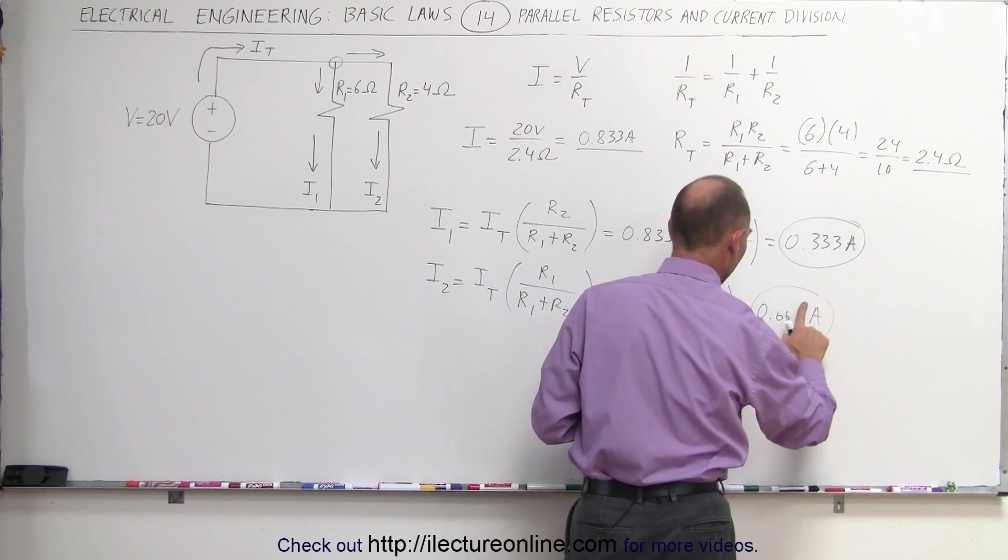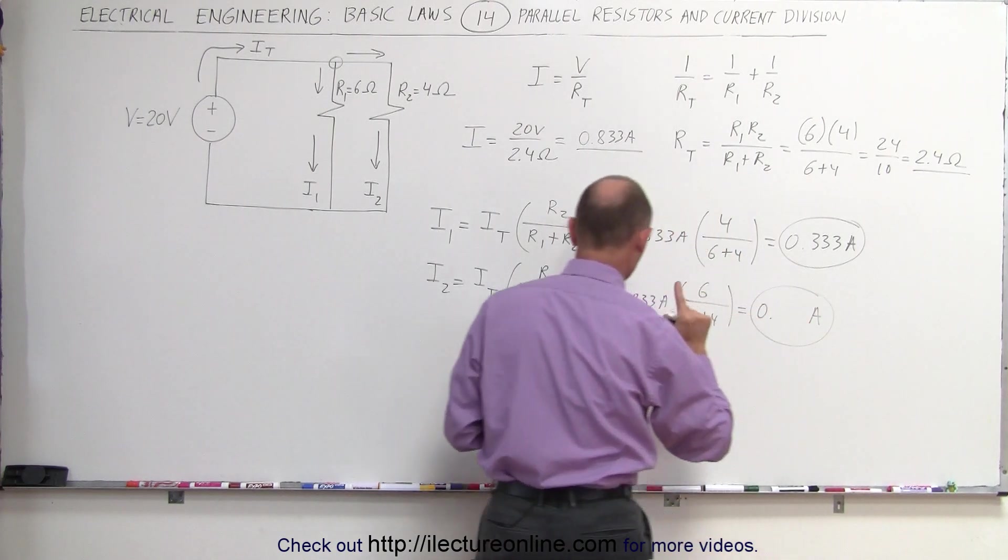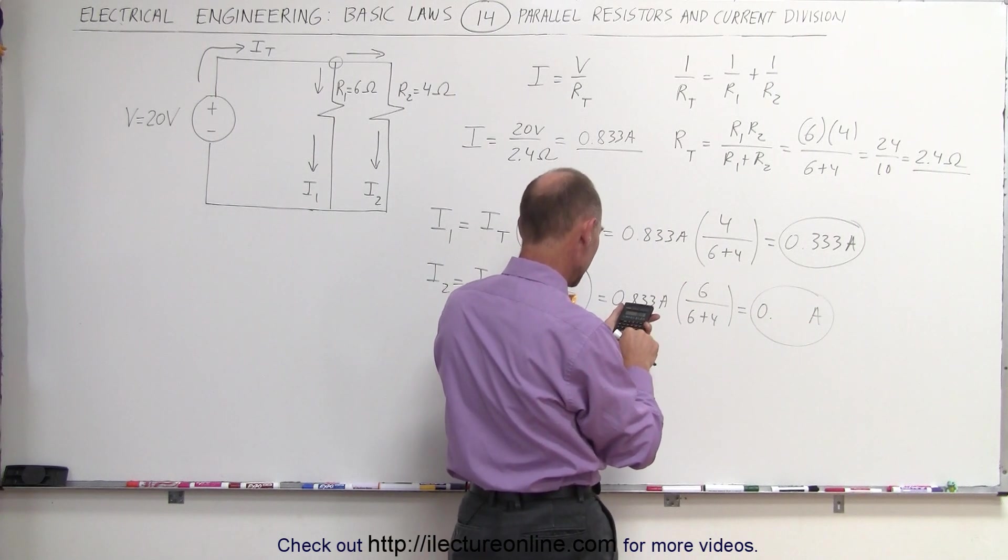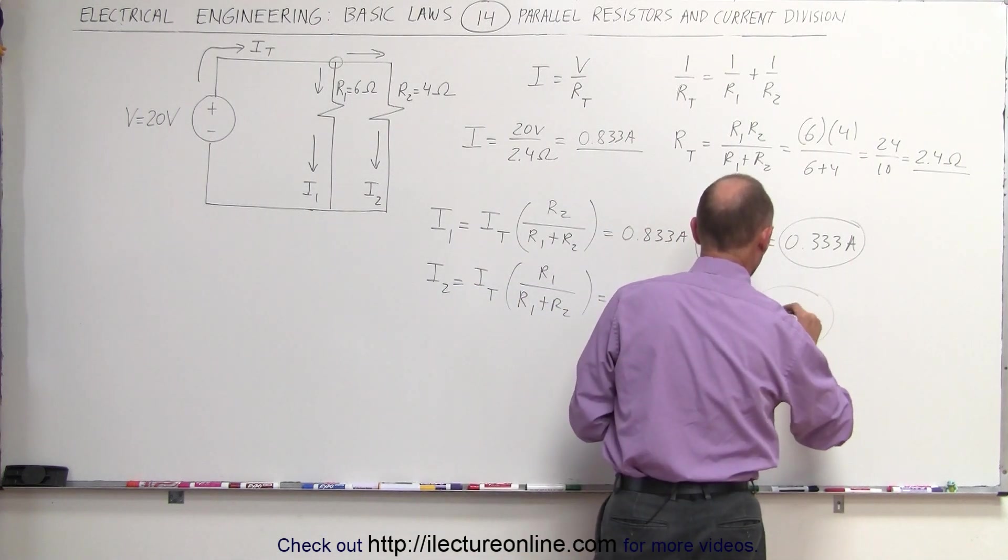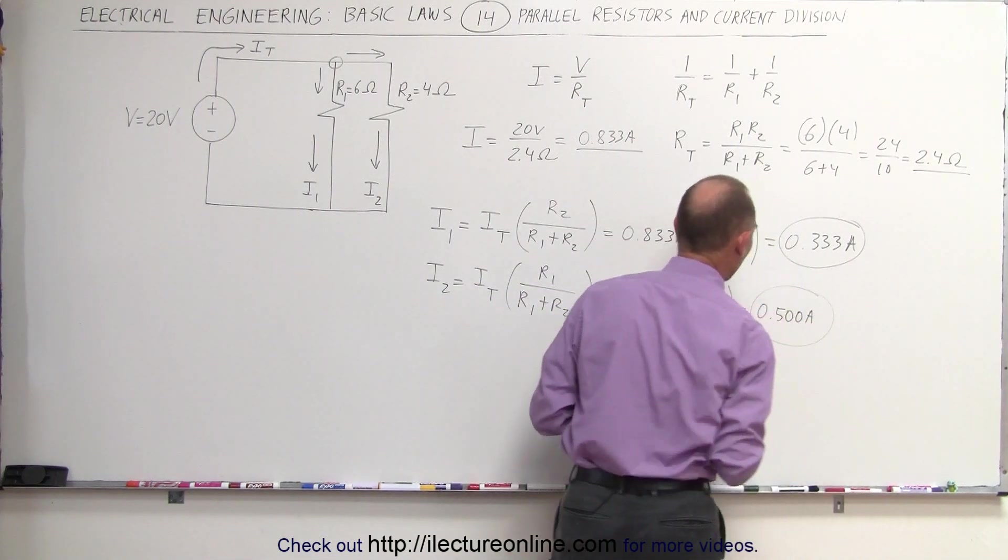Together, of course, oh no, that's not correct. Let me try that again. 0.833 times 6 divided by 10 equals, that would be 0.500 amps. That's better.